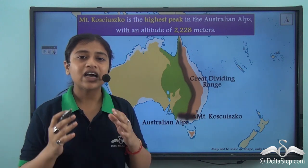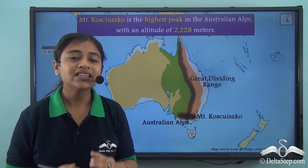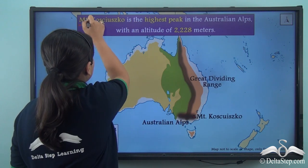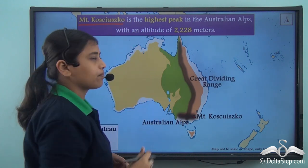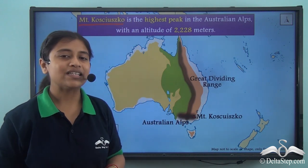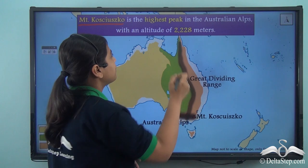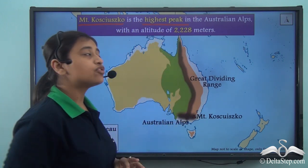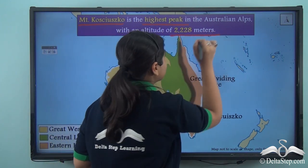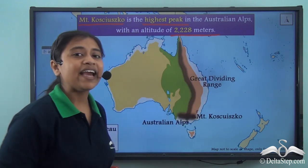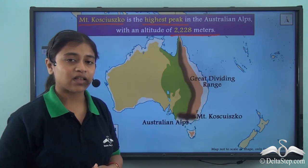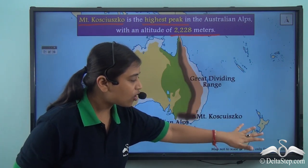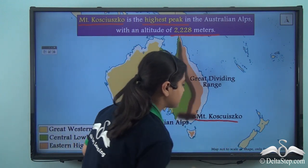In the Australian Alps, the highest peak is Mount Kosciuszko. Mount Kosciuszko is the highest peak in the Australian Alps with an altitude of 2,228 metres, making it the highest peak of the Australian Alps.